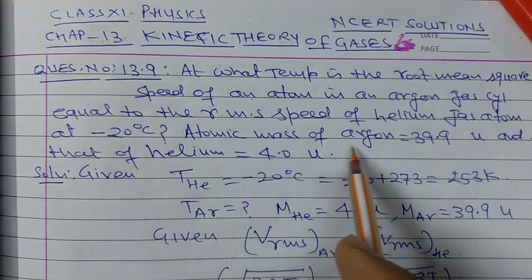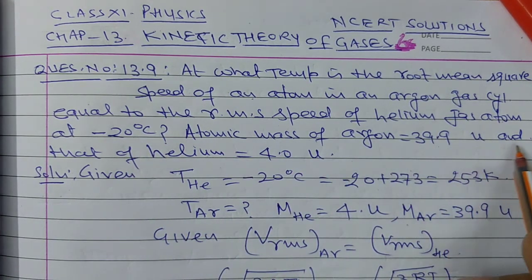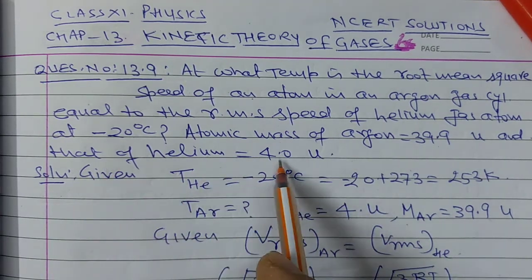Given the atomic mass of argon is 39.9 U and that of helium is 4 U.